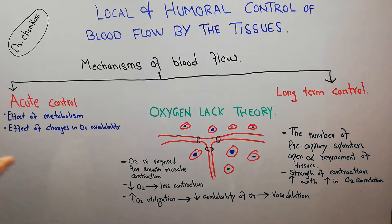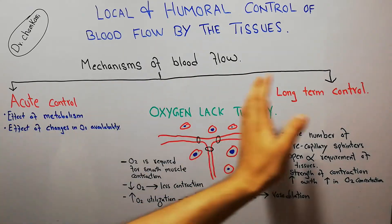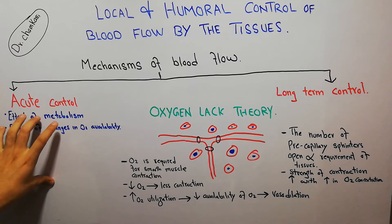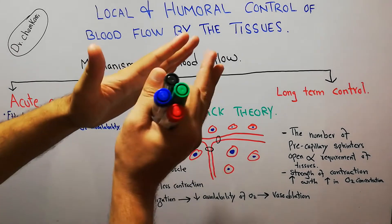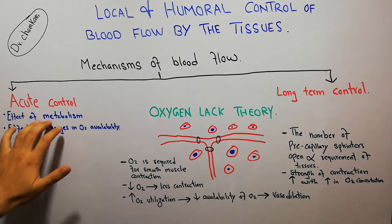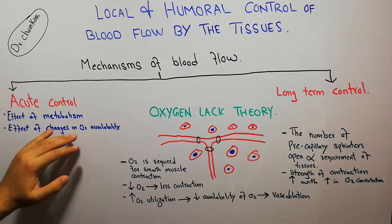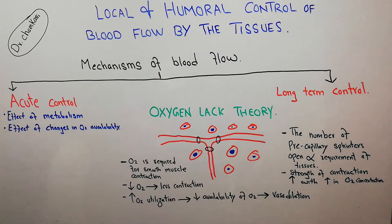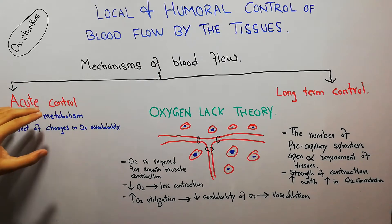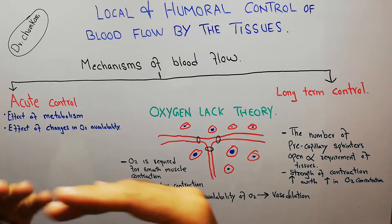Previously we discussed that there are two main mechanisms: rapid or acute control, and long-term control. Acute control is due to vasodilation — an increase in size of existing blood vessels — mainly caused by changes in metabolic rate of the tissues or changes in oxygen availability, producing rapid blood flow changes within seconds or minutes.